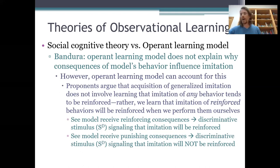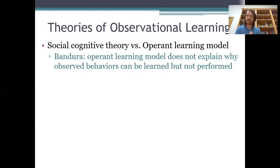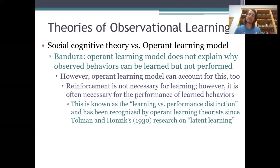As for the other problem Bandura identified with the operant conditioning viewpoint — he didn't think it made any provisions for an observed behavior being learned but not performed. He found that kids who saw the punished model still learned from those observations; they noticed, remembered, and acquired the capacity to perform the model's behaviors but didn't actually imitate them until offered an incentive. However, researchers in operant conditioning actually have a very long history of recognizing the distinction between learning something and performing it.